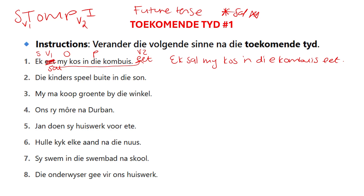Let's test my theory. 'Die kinders speel buite in die son.' Where's my verb? That's my verb 1. In the future tense, I need to move my verb 1 to the end of my sentence. It becomes verb 2 — 'speel' — and my verb 1 becomes 'sal'. Let's read it again: 'Die kinders sal buite in die son speel.' Full stop. Is that toekoms tyd? It is toekoms tyd.